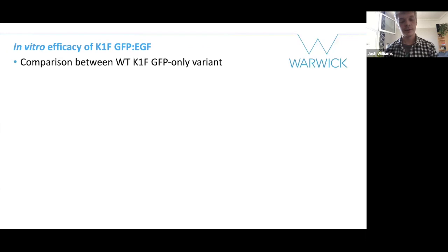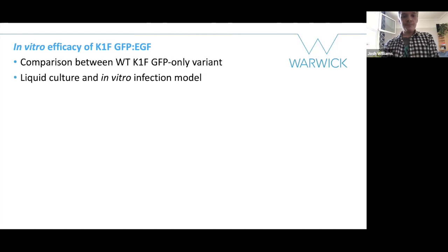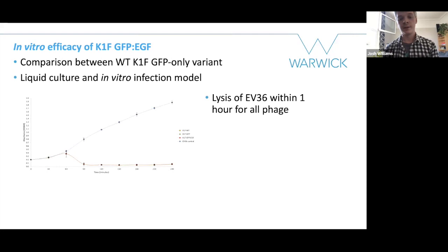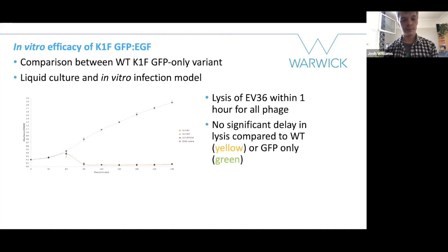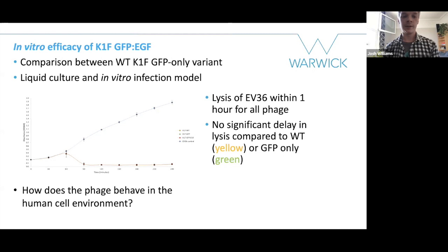I did this in an in vitro cell model using a cell line called T24 — urinary bladder epithelial cells isolated from an 81-year-old patient with transitional carcinoma. First, I also wanted to see whether it was efficient in liquid culture. Yellow is wild-type K1F, green is K1F GFP-only, and the red line denotes the construct I produced. There was no significant delay in lysis — lysis occurred between 60 and 90 minutes — which means there was no significant delay in lysis by adding these additional proteins.